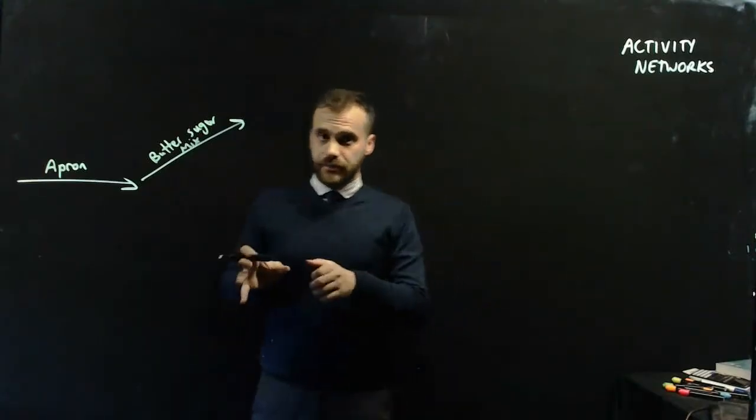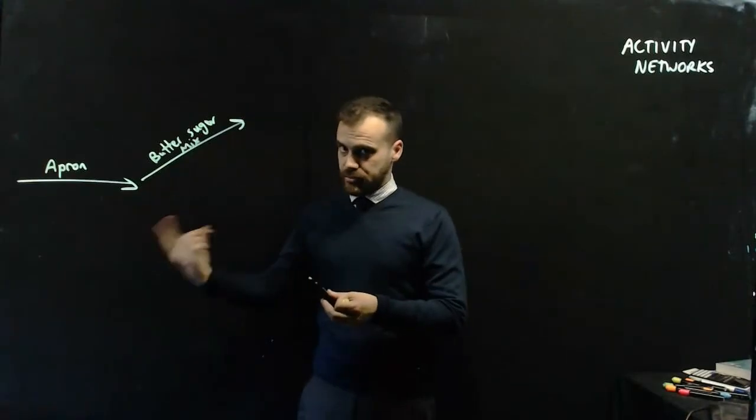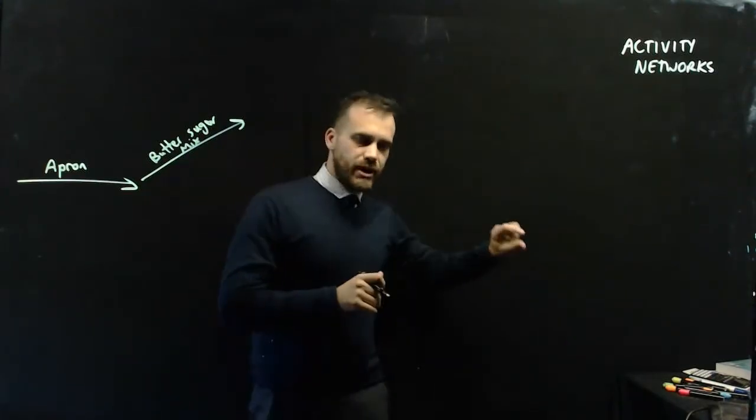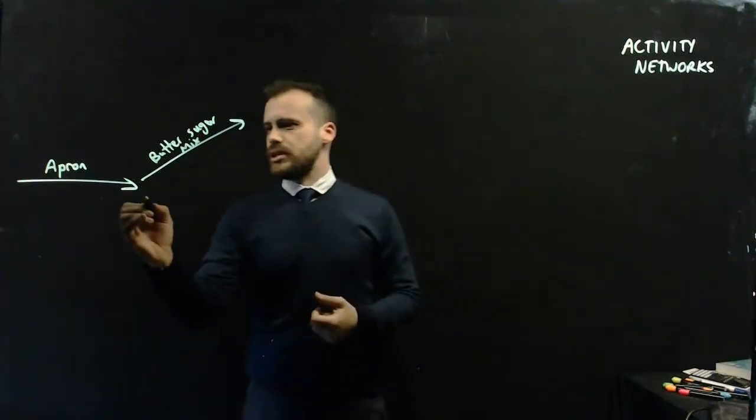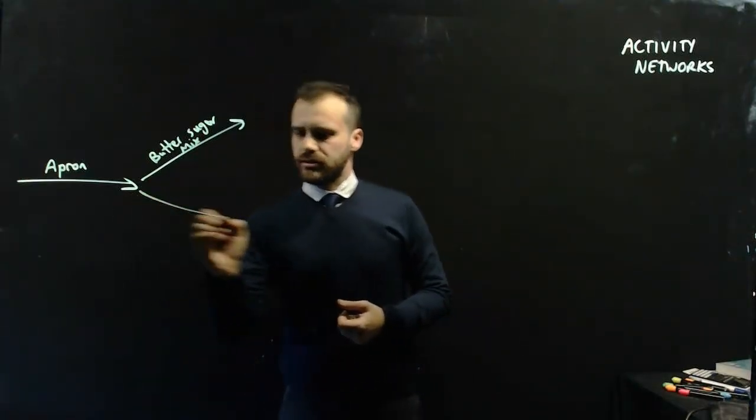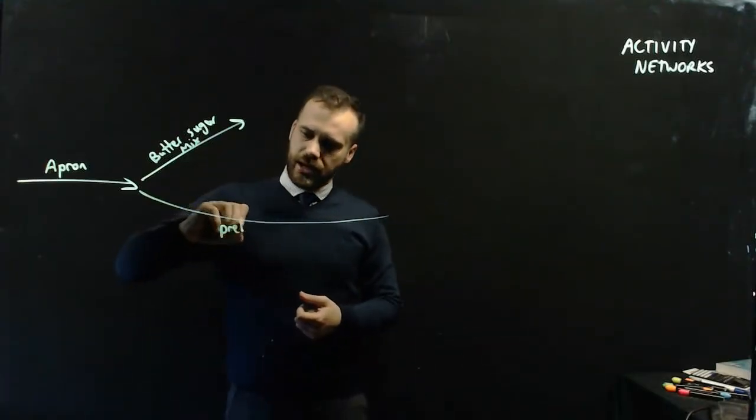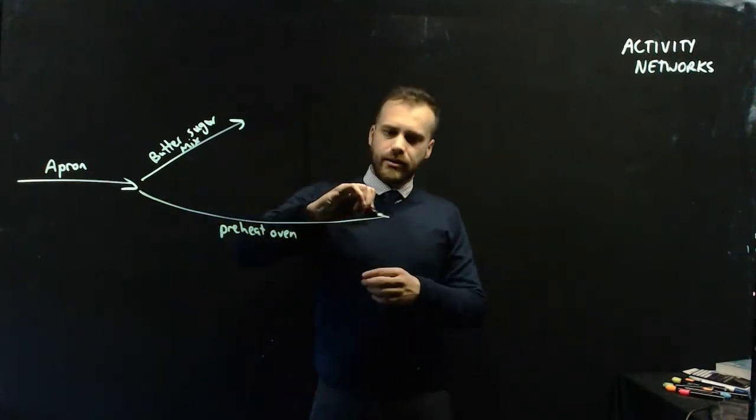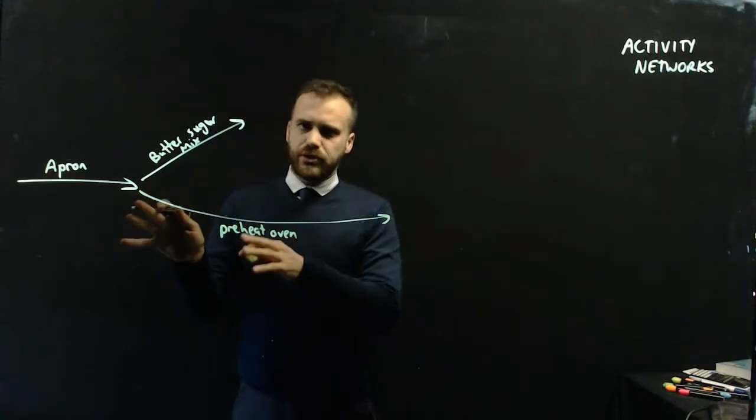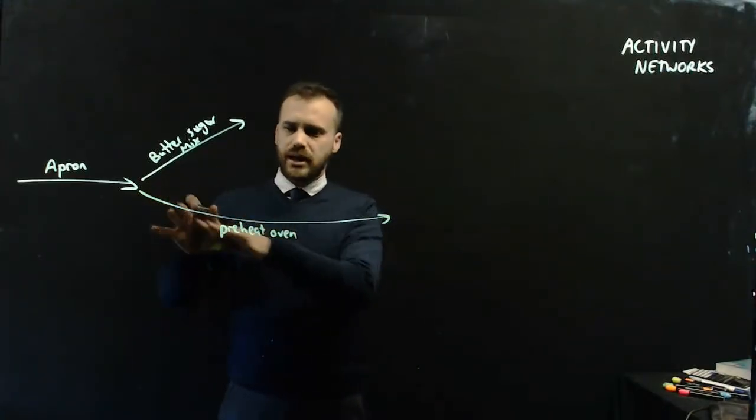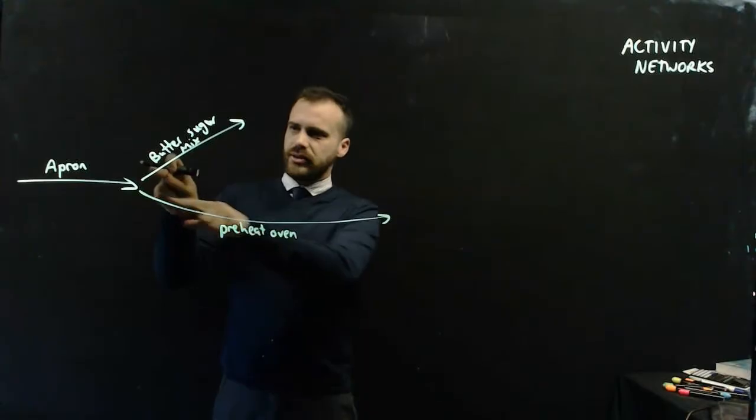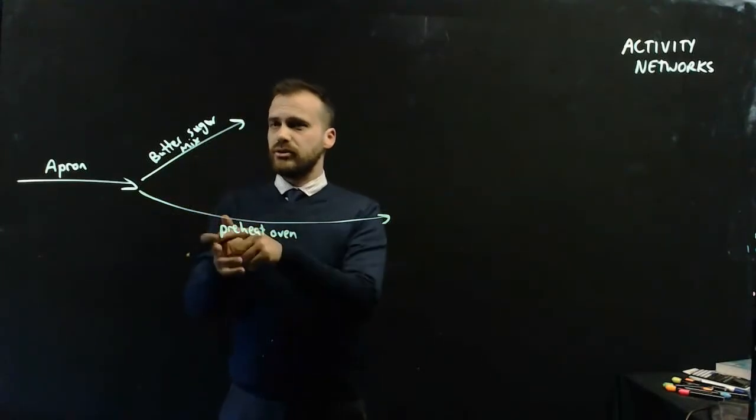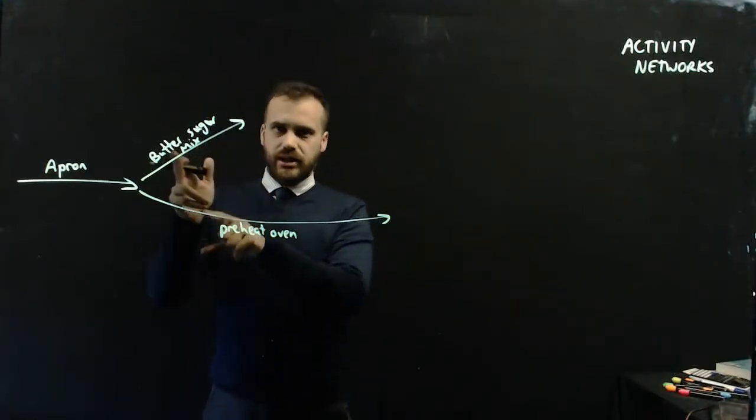Now while that's happening, I put it in my machine and it's mixing. I'm thinking because I like to move fast. The other thing I need to do is make sure that I turn the oven on, because an oven needs to preheat. Once I have my apron on, I can start the butter and sugar mixing, and I can turn on the oven. They don't really depend on each other.